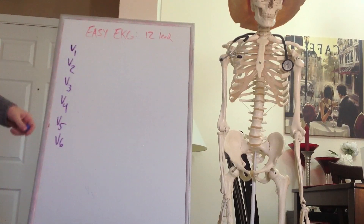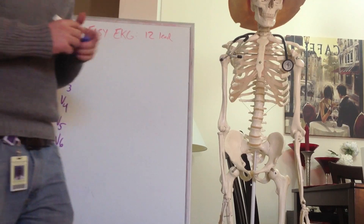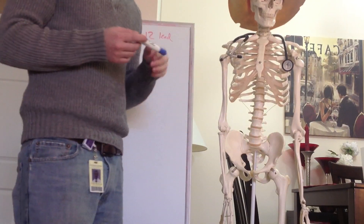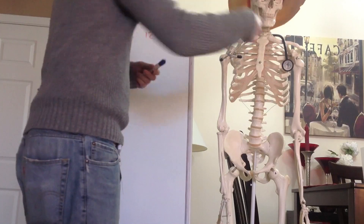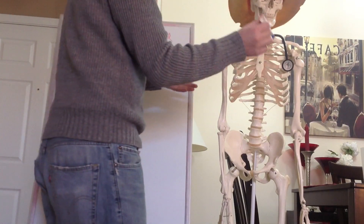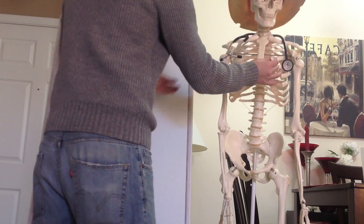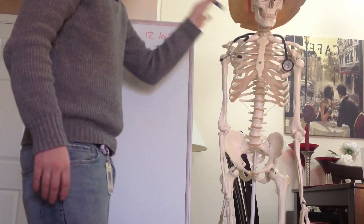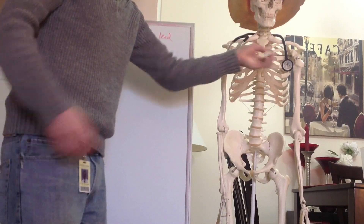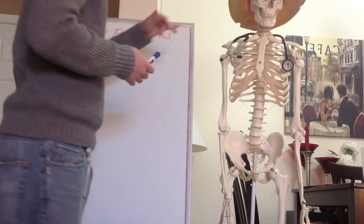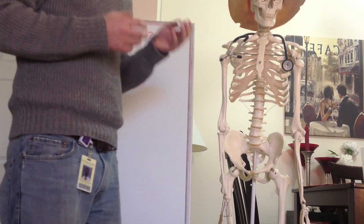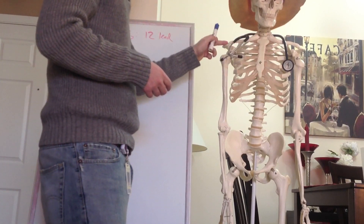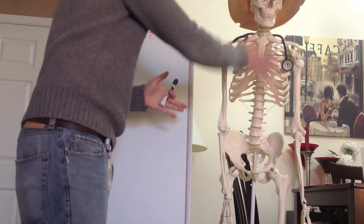These are called the precordial leads, and they actually measure electrical activity from front to back. So instead of going from the right shoulder to the left hip, we're measuring any electrical activity moving from anterior to posterior, or front to back. If we take a marker and slide it in the ribs and out the back, that is the electrical activity we're measuring. Your leads 1, 2, 3, AVR, AVL, and AVF are not going to pick up any electrical activity going front to back — only along the transverse plane.